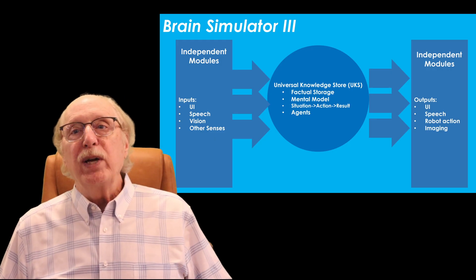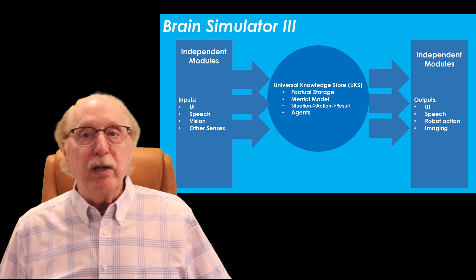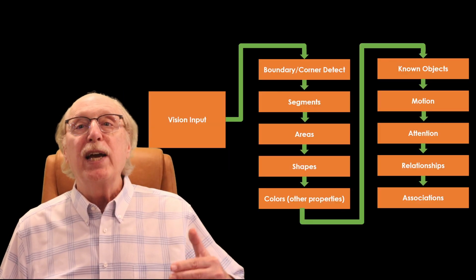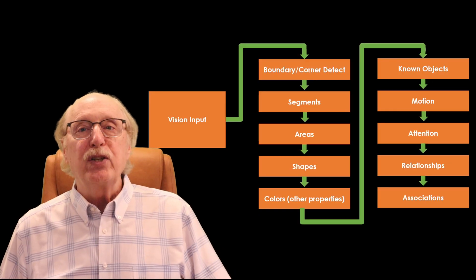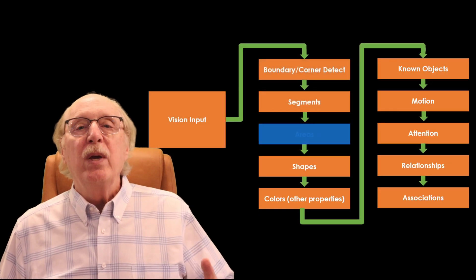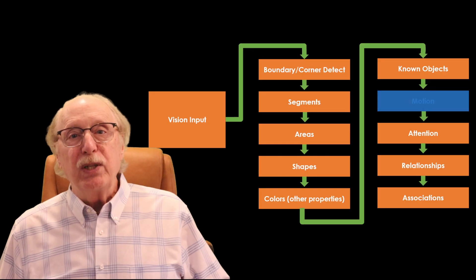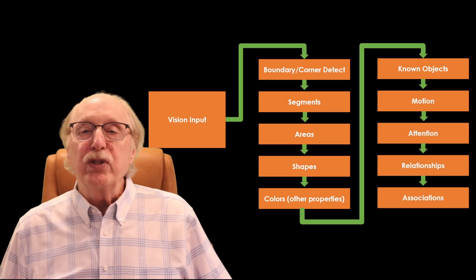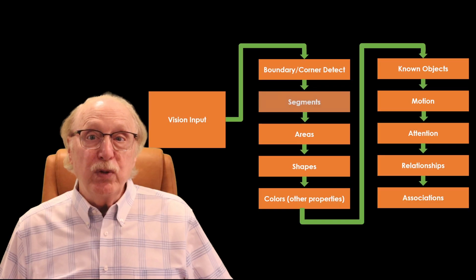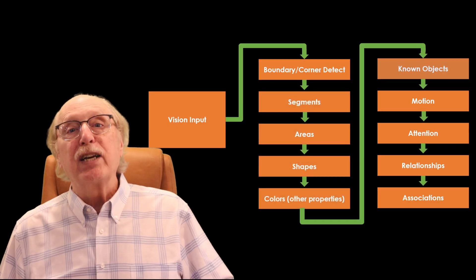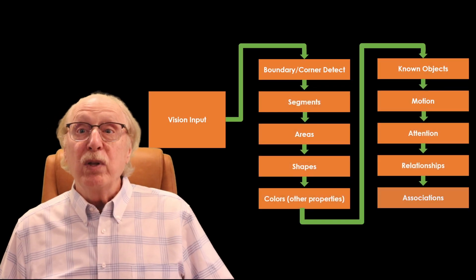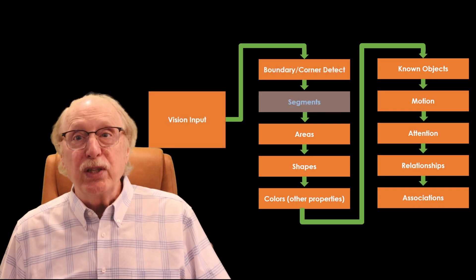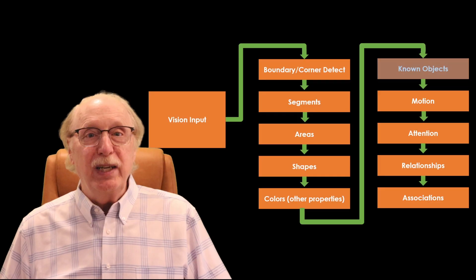Further, your brain's input streams are clearly handled in multi-stage pipelines where each stage adds a part to the recognition process. By making the UKS multi-threadable, Brain Simulator 3 mirrors this concurrency. Modules for perception, reasoning, and action can all interact with the central knowledge store in real time, just as your senses and thoughts operate simultaneously.